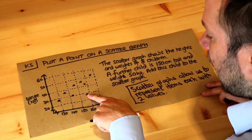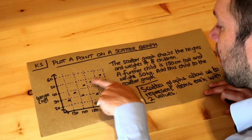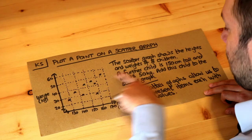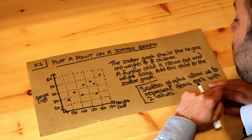So we've got eight children here and each of these crosses represents a child. That's a child, that's a child, that's a child, etc. We've got eight crosses because there's eight children. And now it tells us a further child is 150 centimeters tall and weighs 50 kilograms. Add this child to the scatter graph.